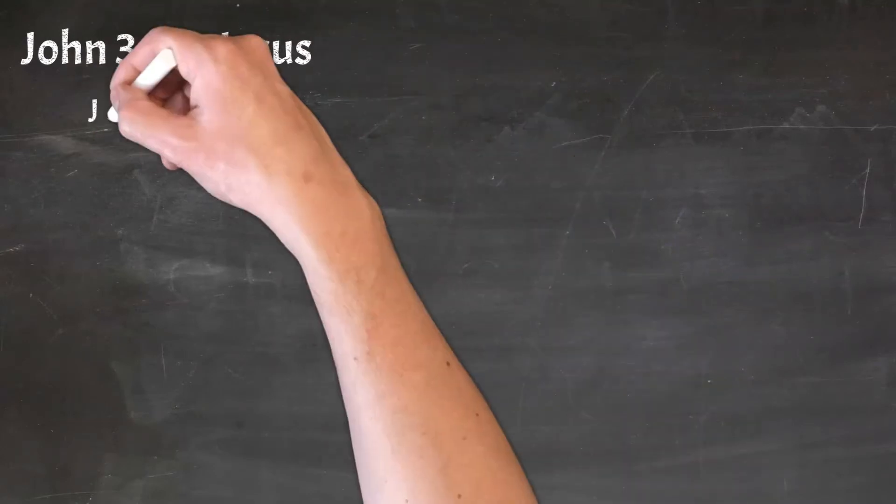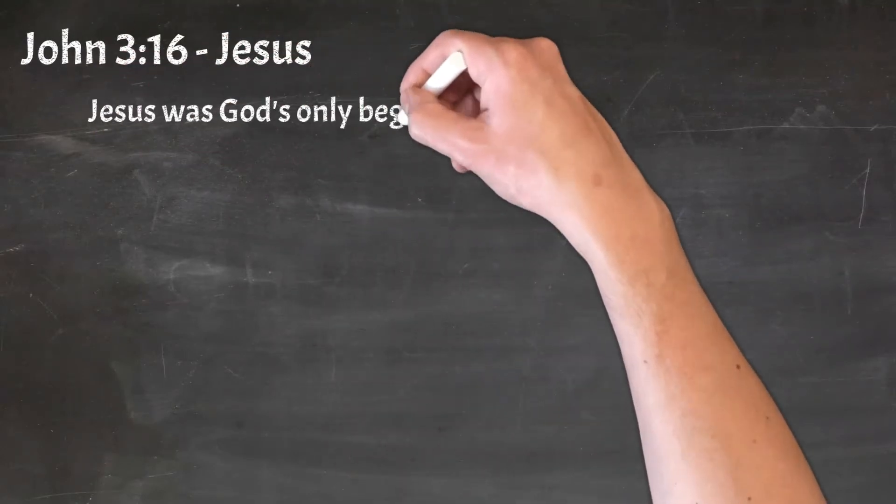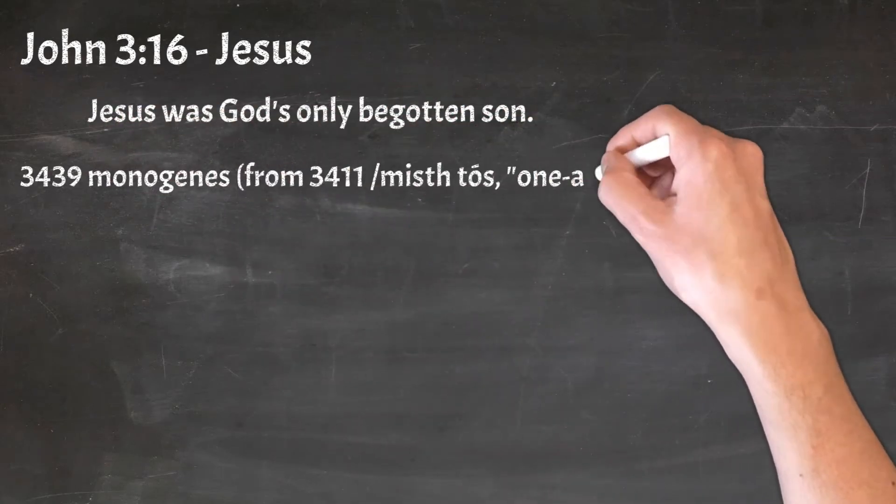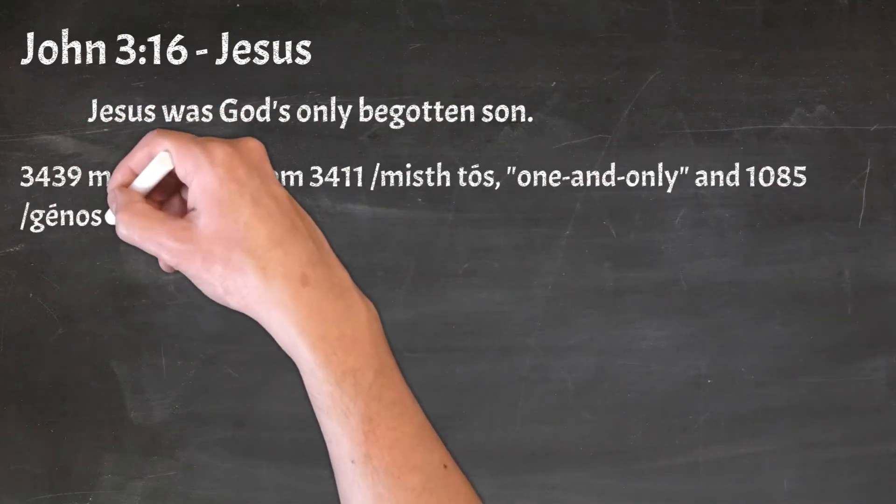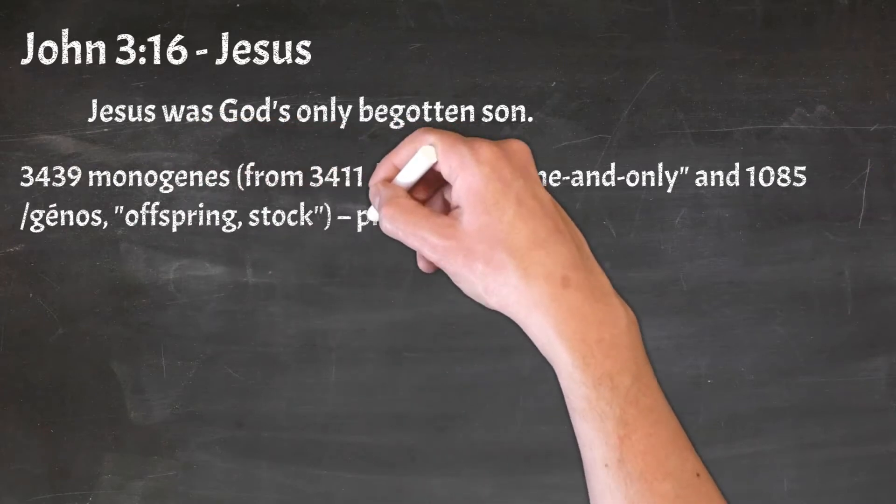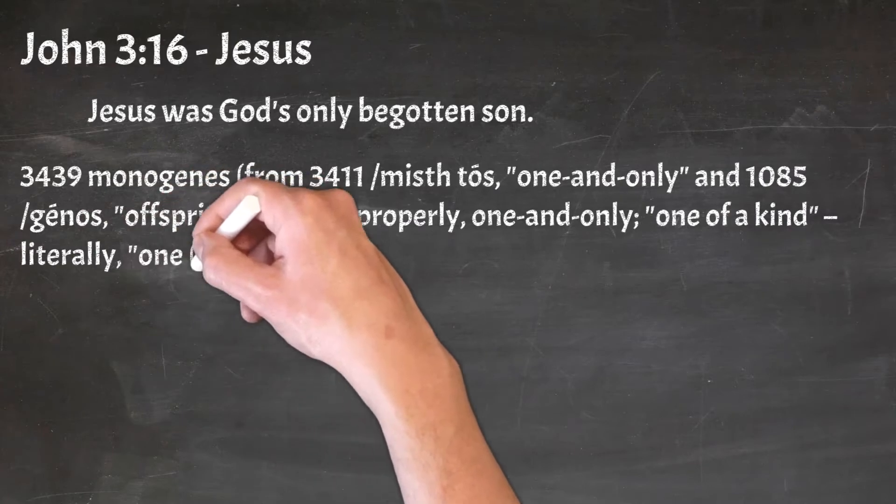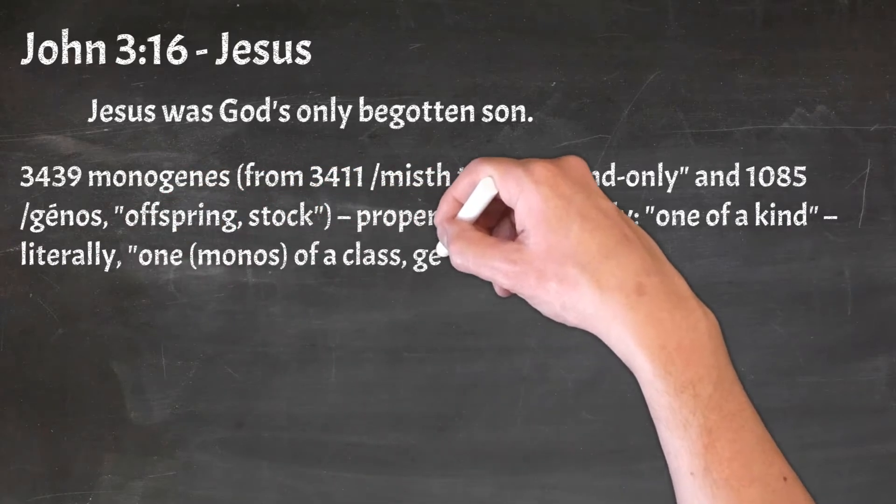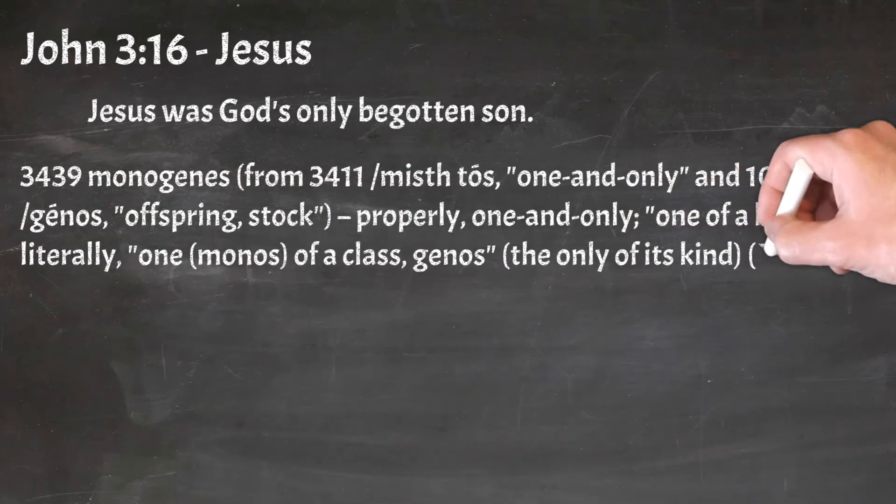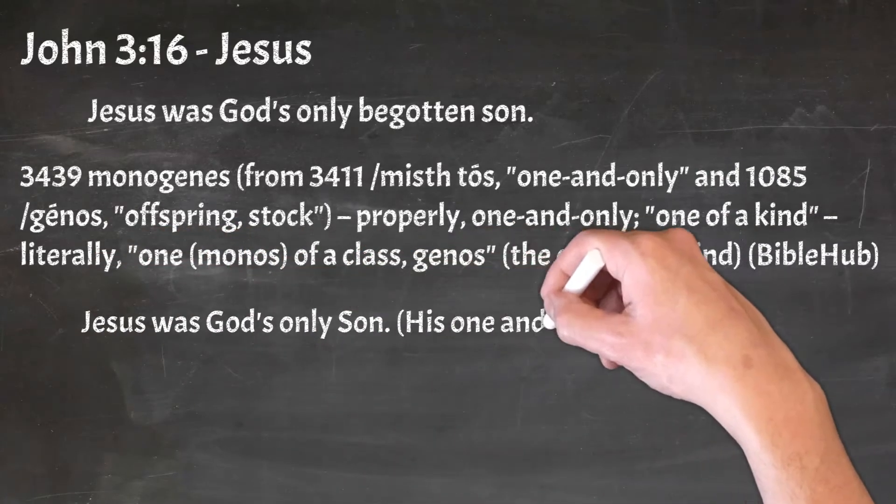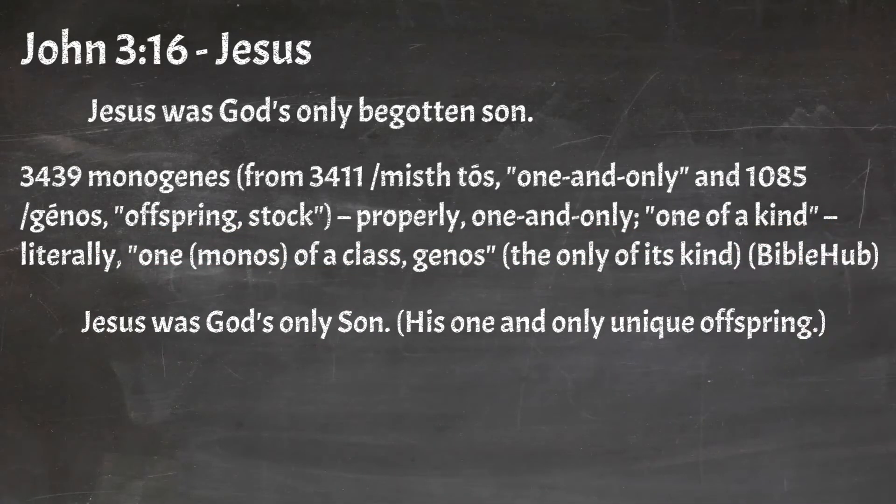John 3:16 on Jesus. Jesus was God's only begotten Son. The Greek in Bible Hub explains to us that the only begotten Son means that it is the one and only offspring of God, he's a one of a kind, the only one in his class or of his kind. Jesus was God's only Son, his one and only unique offspring.